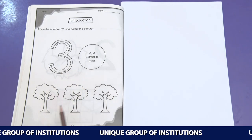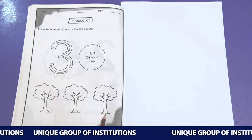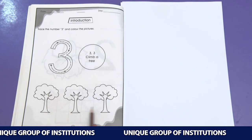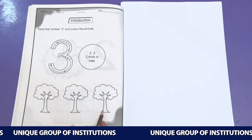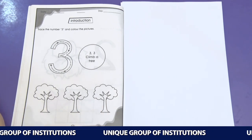Let's count the trees here. 1, 2, 3. There are 3 trees. Here are 3 trees. 1, 2, 3. Three trees are here.